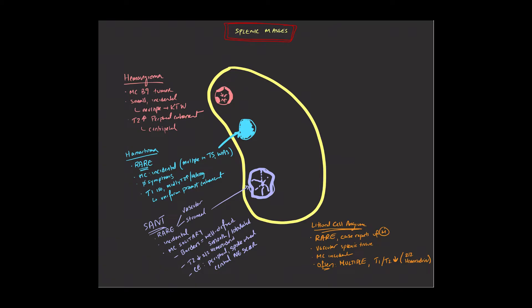And when we give contrast in these patients, these lesions will demonstrate progressive homogeneous enhancement. If you're seeing multiple masses, relatively dark T2 signal, homogeneous enhancement, one thing to think about is going to be a littoral cell angioma.